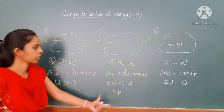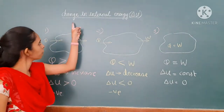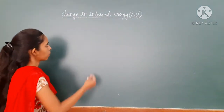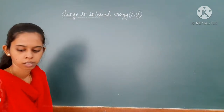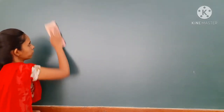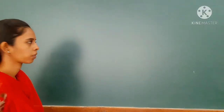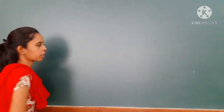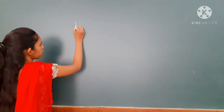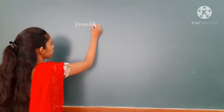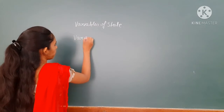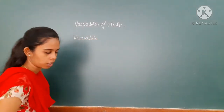So these are the three cases of change in internal energy. Now let us see about variables — according to the variables we can explain the equilibrium position of a thermodynamic system. So thermodynamic variables and the equation of state.